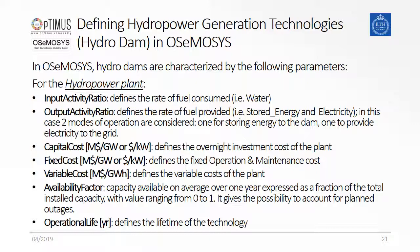Hydro power plants can either store or hold back the water that comes from the river, or they can let it run through and produce electricity. To represent this in Osmosis, we need to use the feature of defining more than one mode of operation — one mode for filling the reservoir and one mode for producing electricity. In mode of operation one, we are filling the reservoir with the water from our river technology. To do so, we define the input activity ratio for the fuel water and the output activity ratio for the fuel stored energy.